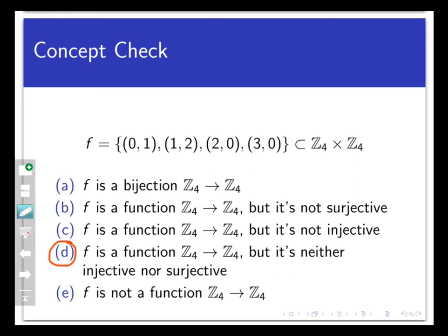However, it's not injective because 2 and 3 both map to 0, and it's not surjective because nothing maps to 3. I never see a pair with 3 in the second coordinate. So that's a function.